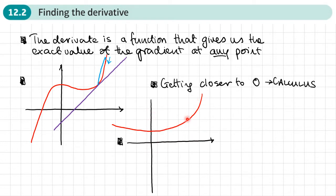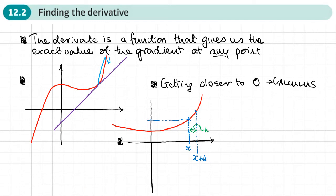Let's say we've got a graph and I want to find the gradient at a particular point — at this X value. For that X value, I'm going to have a particular Y value. Further along the curve, I'm going to have another X value that's a little bit bigger. I'm going to call that gap H, so this X value is going to be X plus H — the gap between these two is H. Now, another way of writing the Y coordinate here is F of X, so the Y coordinate at X plus H can be written as F of X plus H, which means taking the X coordinate and putting it into the function to get the Y coordinate.